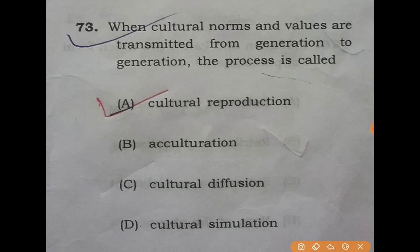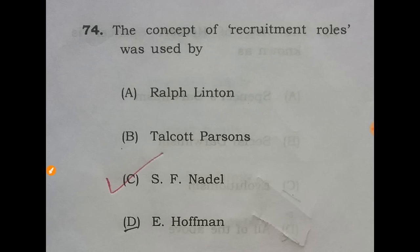Question 73: when cultural norms and values are transmitted from generation to generation, the process is called — the answer is A: cultural reproduction. Question 74: the concept of recruitment roles was first used by — the answer is C: S.F. Nadel.